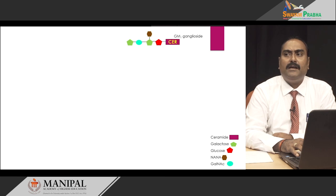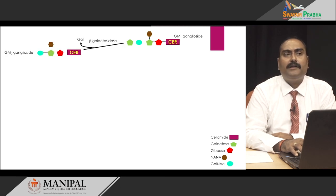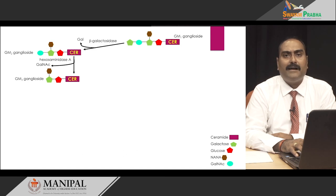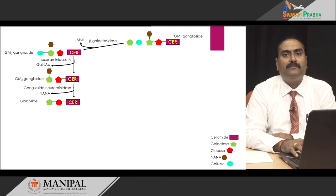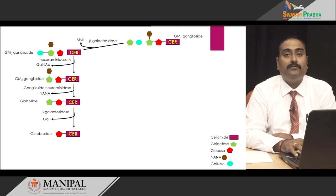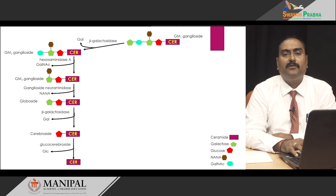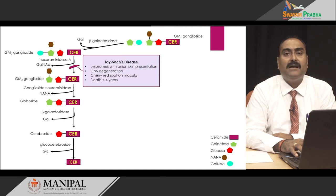Now let us see the other disorders. GM1 ganglioside is formed by the combination of ceramide with glucose, galactose, N-acetylneuraminic acid, galactose, and N-acetylgalactosamine. It can be converted to GM2 ganglioside by removing the terminal galactose. GM2 ganglioside can be converted to GM3 ganglioside by removing the N-acetylgalactosamine; the enzyme required for this is hexosaminidase A. GM3 ganglioside can be converted to a globoside by removing the N-acetylneuraminic acid using the enzyme neuraminidase. If there is deficiency of hexosaminidase A, it will cause a disorder known as Tay-Sachs disease.